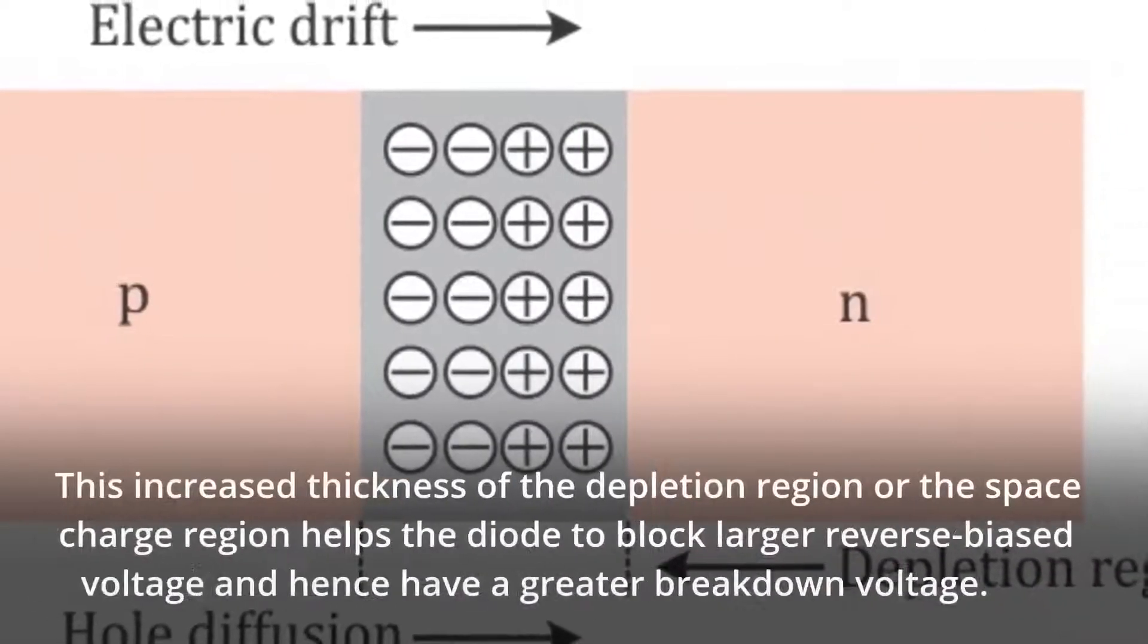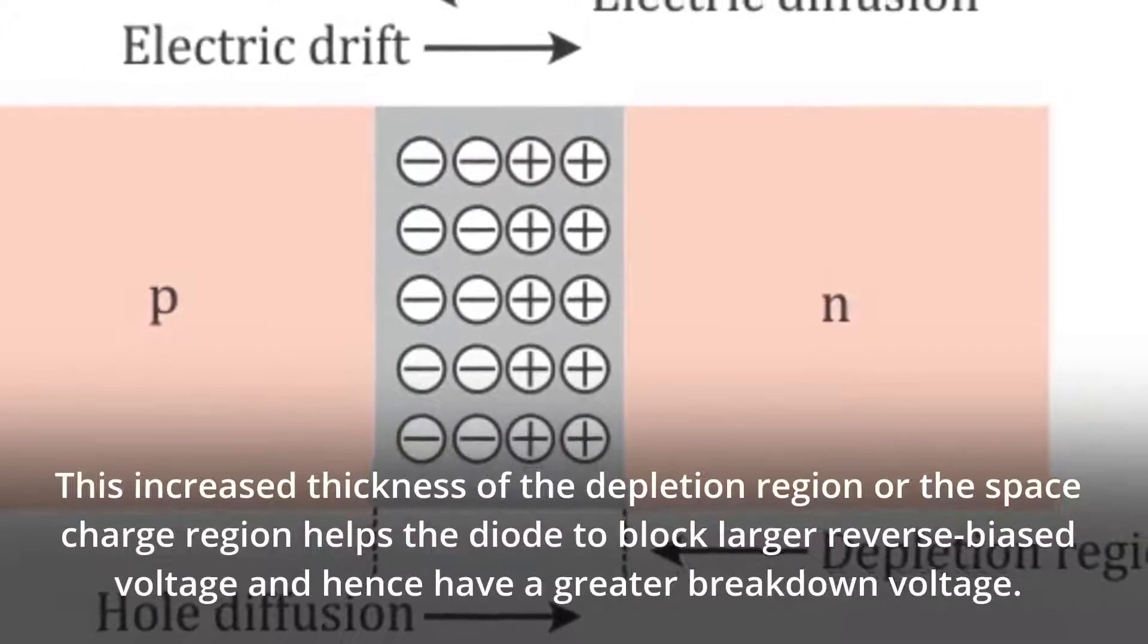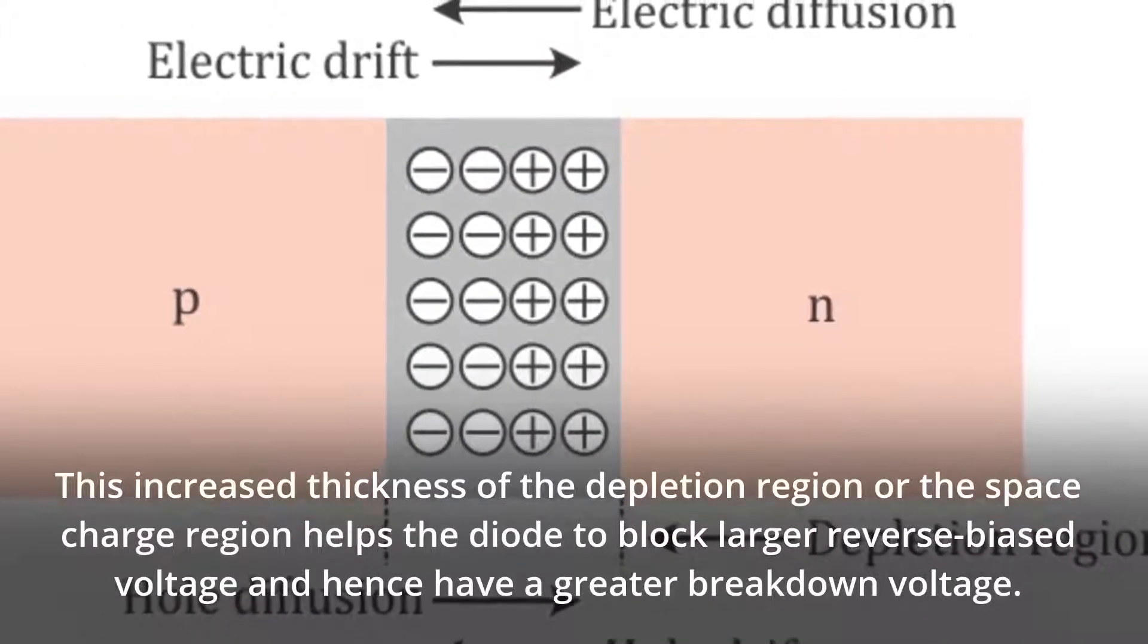This increased thickness of the depletion region or the space charge region helps the diode to block larger reverse biased voltage and hence have a greater breakdown voltage.